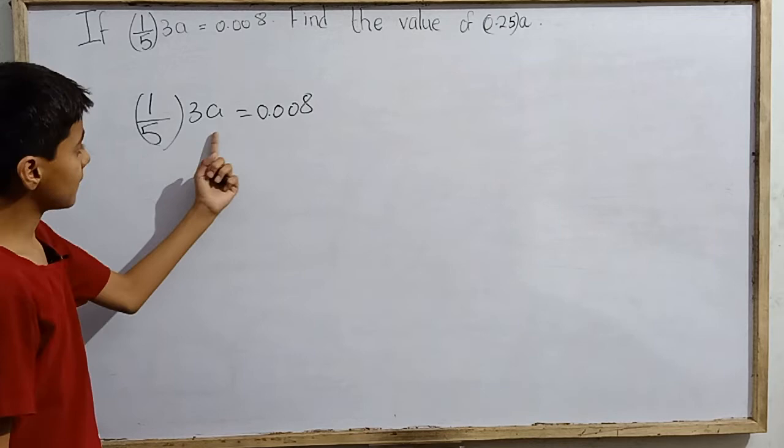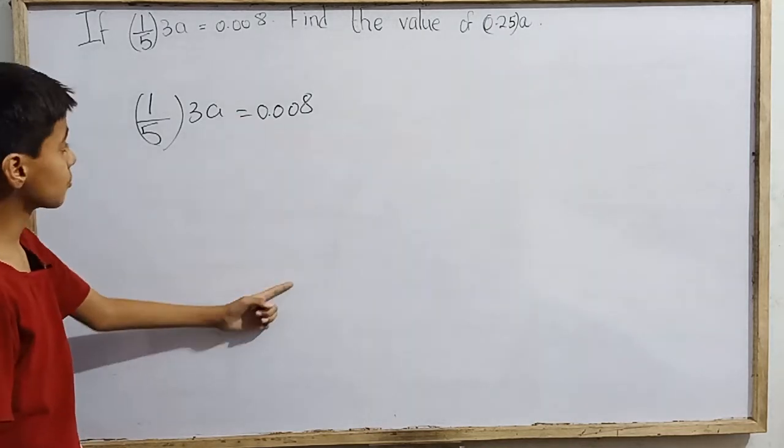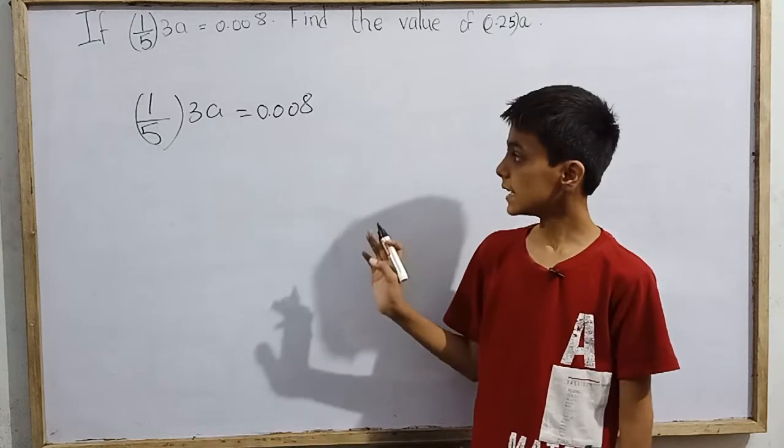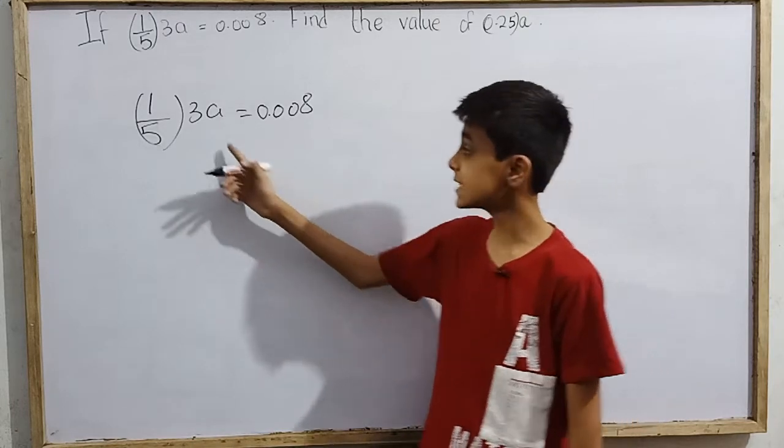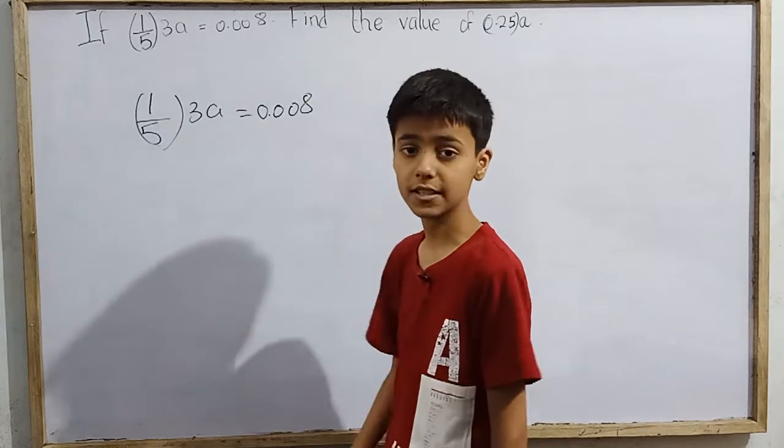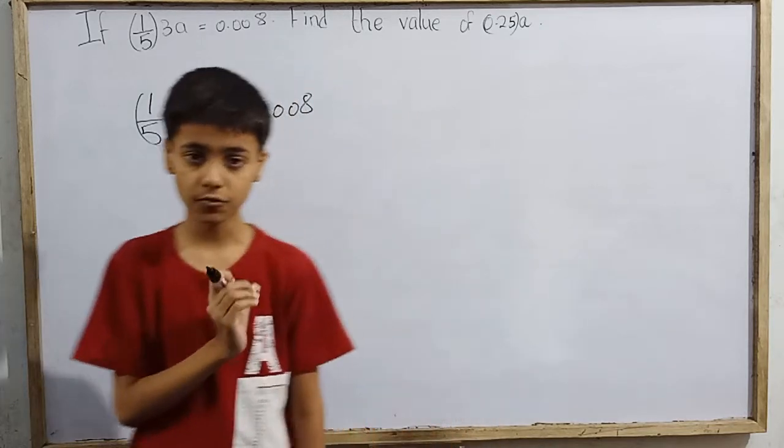Here is 1 by 5 into 3a equals 0.008. Now first, we need to know for what values of a does it satisfy the conditions. What values of a?